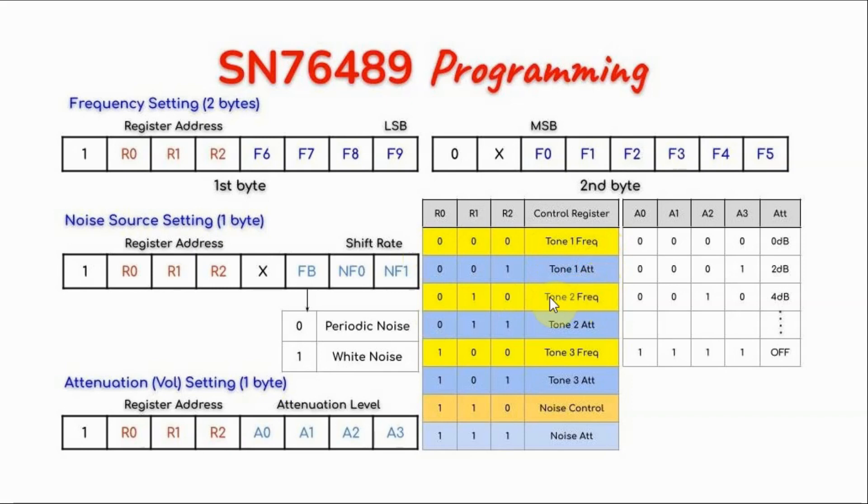We will consider the 3 registers here: the tone 1 frequency register, part of channel 0, and the tone 2 frequency register, part of channel 2. So if we put a value of 0, 0, 0 here, it means we are selecting channel 0 which will generate a tone 1 signal.